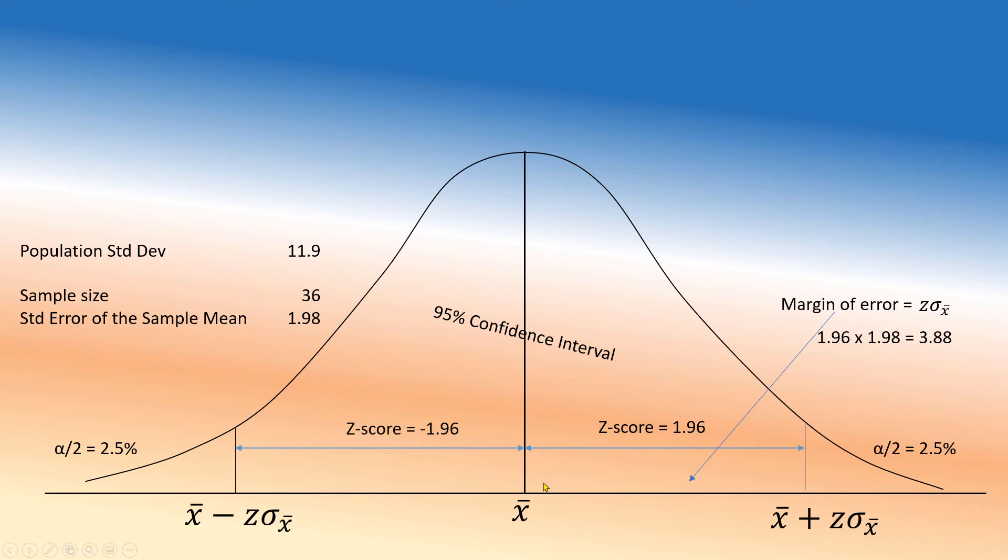So whatever sample mean we get, our 95 percent confidence interval will be sample mean plus minus 3.88. If we get a sample mean of 60, 60 plus minus 3.88. If we get sample mean of 90, 90 plus minus 3.88. So you know how critical it is to get a good sample mean.